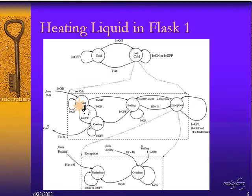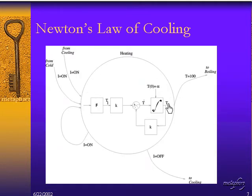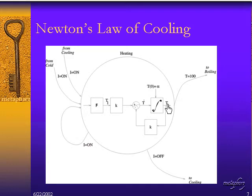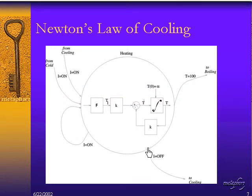We can dive in again to the heating state. When we focus in on the heating state, we find a functional block model which could also be represented as a differential equation — Newton's law of cooling and heating. It is a differential equation with respect to a variable called T, which is temperature, and temperature changes over time. As the temperature changes, external transitions can cause a change in state. If the temperature reaches 100 degrees Celsius, we move to the boiling state. If the input is turned off, we move to the cooling state. As long as the input remains on, we stay within the heating state.